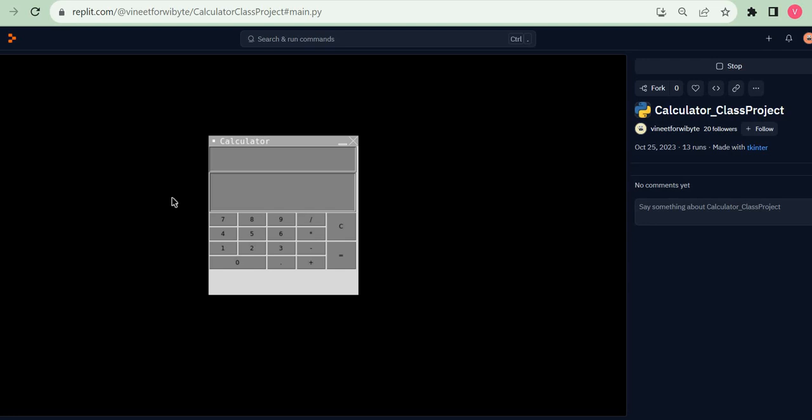The first thing to notice is that we are building this in tkinter. Notice that we are going to use the label and the button widgets, but also notice that these widgets are arranged in a very neat and orderly fashion. The way we are going to do this is by using what is called the grid geometry manager in tkinter.